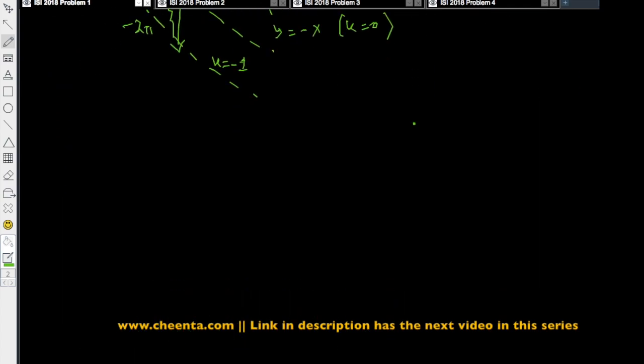Well, whenever you have absolute value problems - so this is a general strategy again - whenever you have absolute value problems, convert it into piecewise functions. The absolute value symbol basically says that there are multiple equations hidden inside one equation. So let's do that in this case: |x| + |y| = 1. And we have four cases: